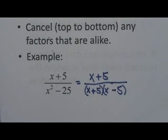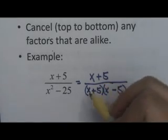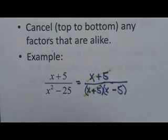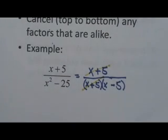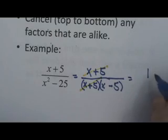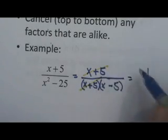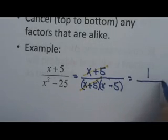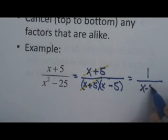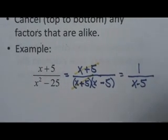Now we need to cancel. We have an x plus 5 on top and an x plus 5 on bottom. They are alike, so they cancel. Now remember, when you cancel, and it looks like you have nothing left on top, you're still left with a 1. So even though the x plus 5 goes away, there's still a 1 there. We cancel the x plus 5 on bottom, so it goes away. And we're just left with x minus 5. 1 over x minus 5.